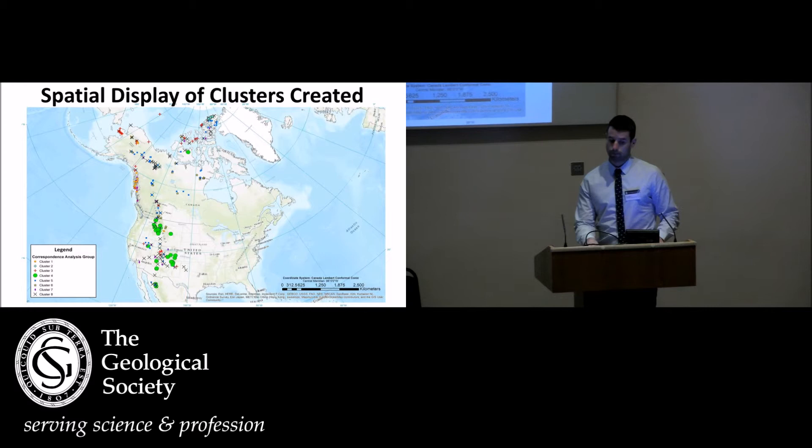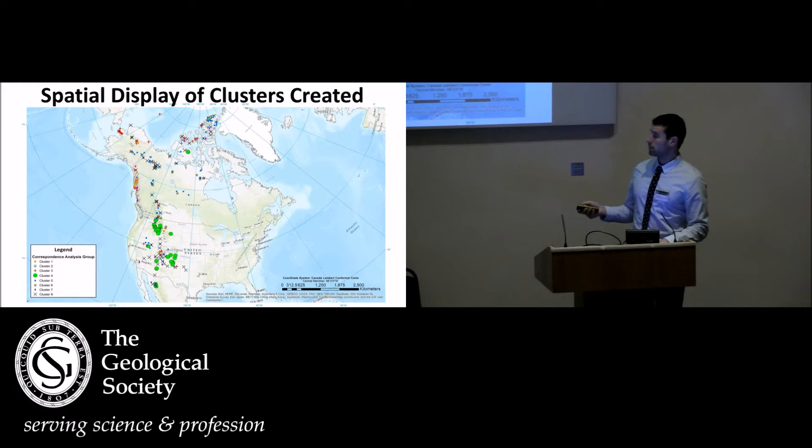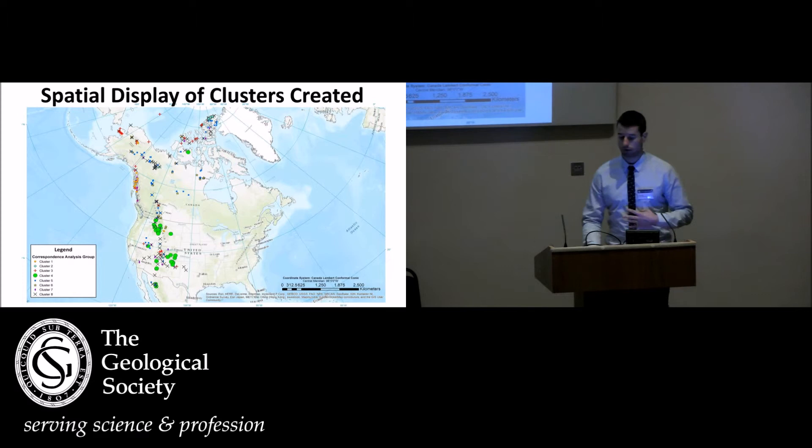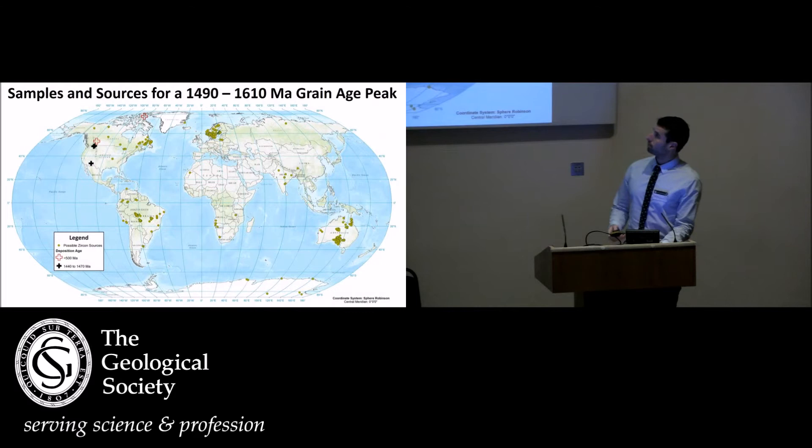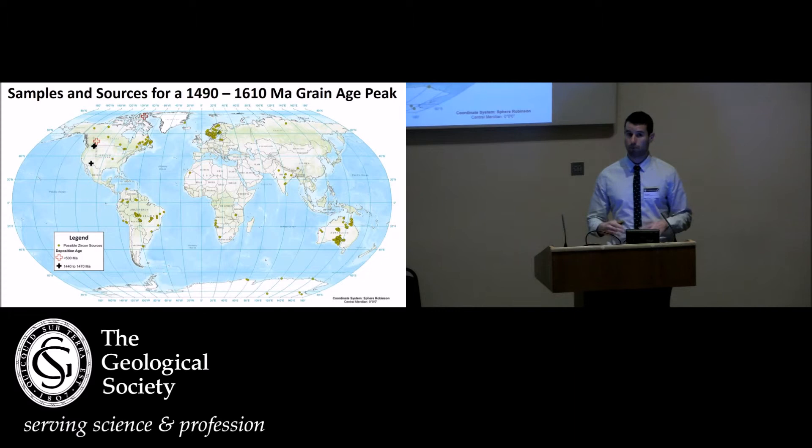Using k-means clustering, I have clusters plotted that we've created. I've purposely symbolized cluster four much more distinct than the rest because we believe that cluster four is picking up all of the samples that have grain ages that are characteristic of this North American magmatic gap. And to help support that theory, I just want to show—